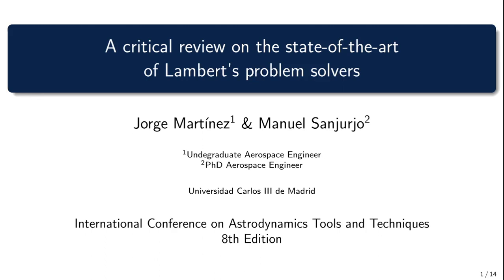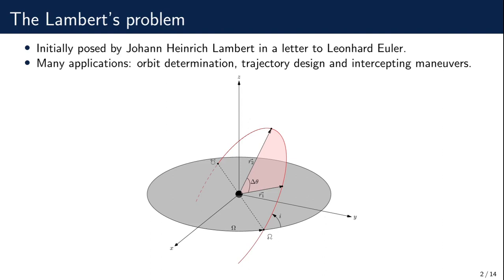So first things first, what is the Lambert's problem? It is a very popular astrodynamics and orbital mechanics problem originally posed by Johann Heinrich Lambert, which states to find the orbit connecting two known position vectors over a finite amount of time. The whole problem is modeled under the two-body dynamics assumption — it is the two-body point boundary value problem.